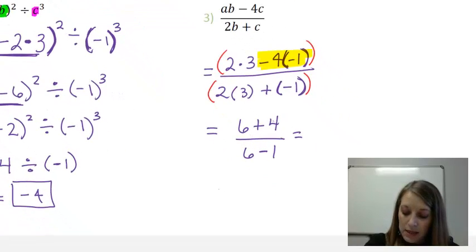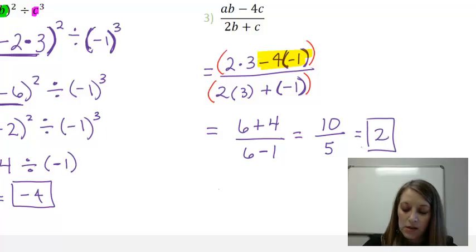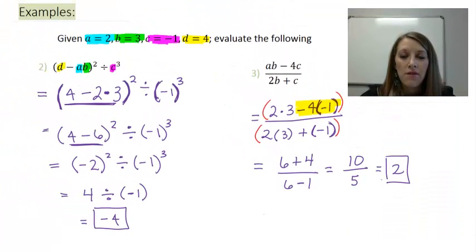On the top, 6 plus 4 gives me 10. On the bottom, 6 minus 1 gives me 5. And so my last thing is to divide these. 10 divided by 5 gives me a final answer of 2. So there is how you would evaluate a variable expression. Just substitute in the numbers and then simplify from there using your rules of order.